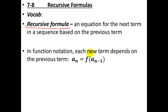So in function notation, we can say that each new term, a sub n, depends on the previous term. So the new term is a function of the previous term. And so a sub n represents the nth term. a sub n minus 1 represents the n minus 1th term, which is the term right before it. So the fifth term depends on the fourth term. And the 12th term depends on the 11th term.